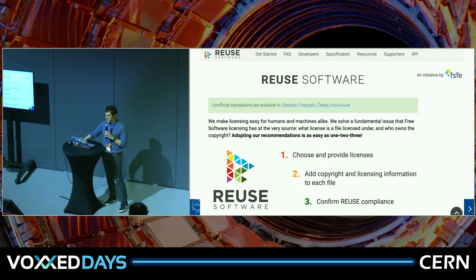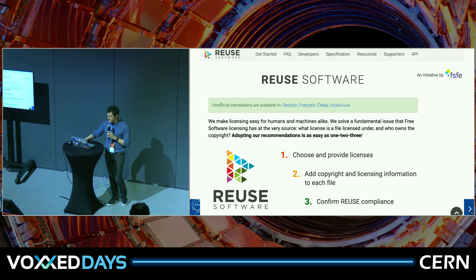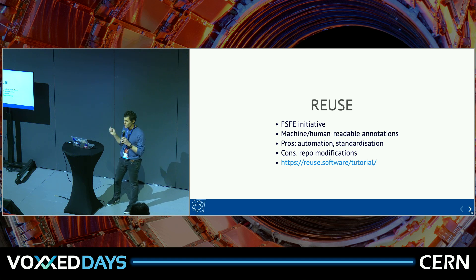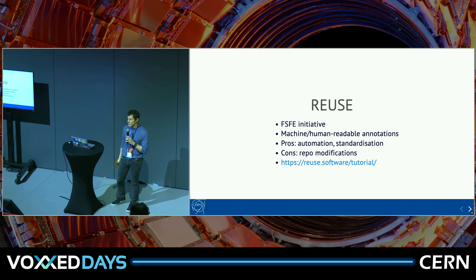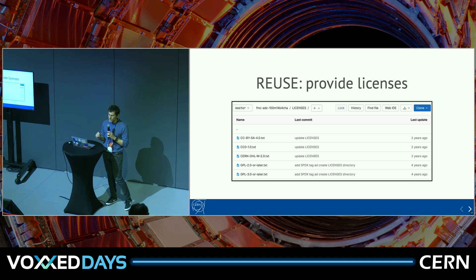Fortunately there are frameworks and tools that help sort this out and define a more standard way to define copyright and license information. One of those is the REUSE software framework, developed by the Free Software Foundation Europe. It's basically a way to add machine- and human-readable annotations to code to express copyright and license information. The main advantages are improved automation and standardization, though it does require modifications to your repository. There's a link to the tutorial here.